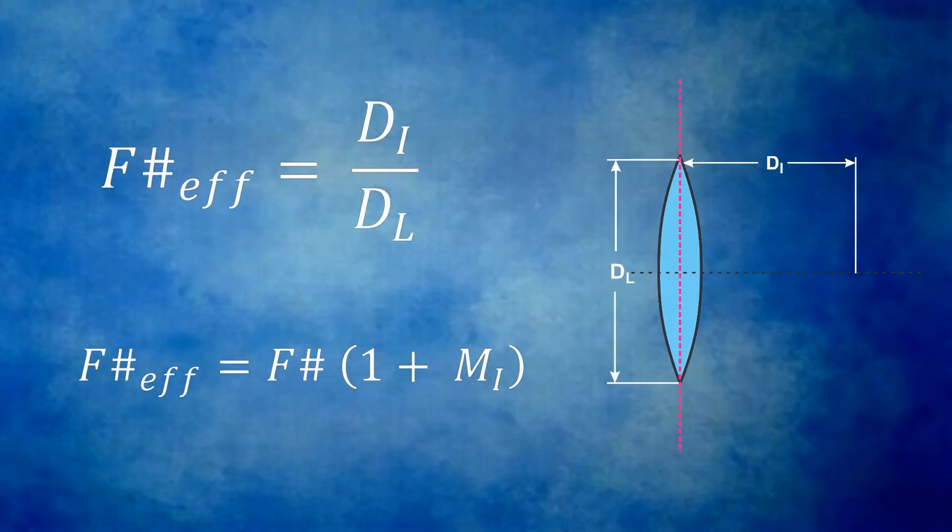The actual light gathering power of a lens is its effective F number, denoted F, the hash sign, and the subscript EFF. It is the image distance of the lens divided by the lens's diameter. It is also the F number times the quantity 1 plus the magnification.